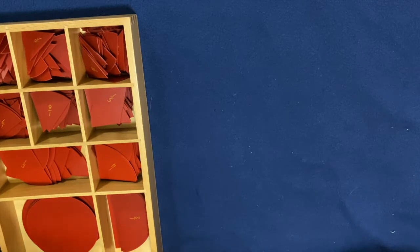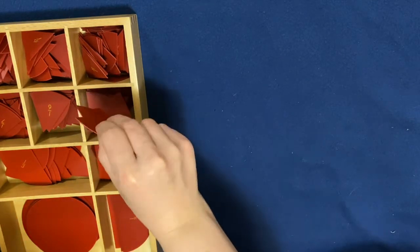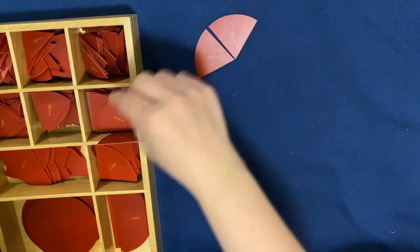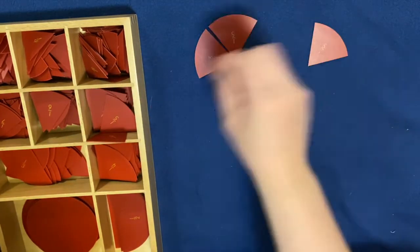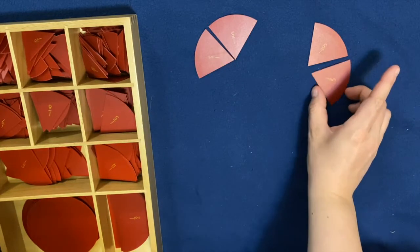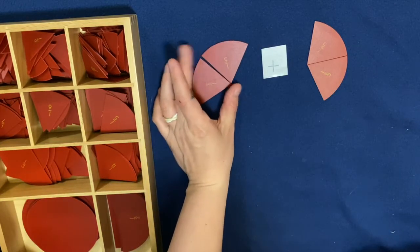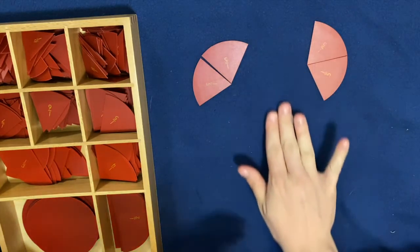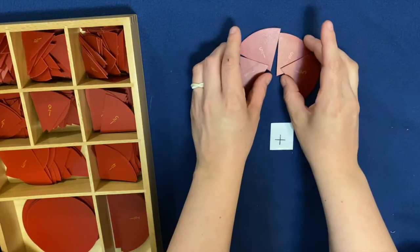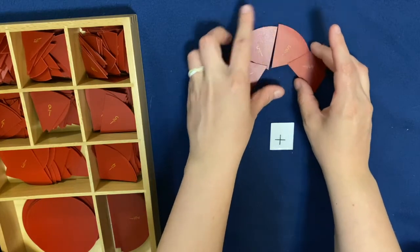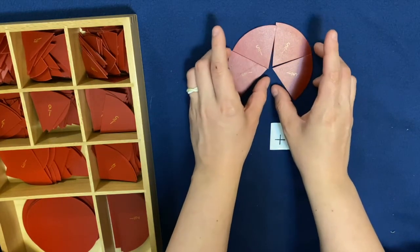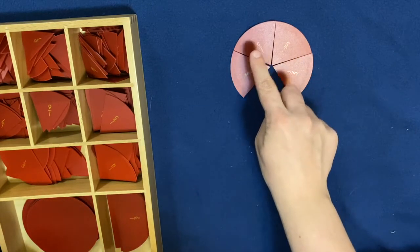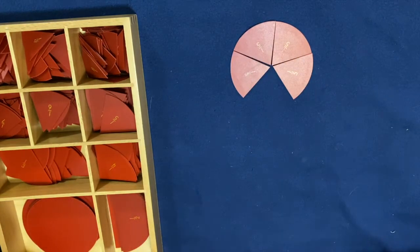So let's go ahead and take a little look here. If I wanted to add two-fifths plus two-fifths, when we add things, we push them together. So two-fifths and two-fifths when put together gives you how many fifths all together? One, two, three, four. That equals four-fifths.